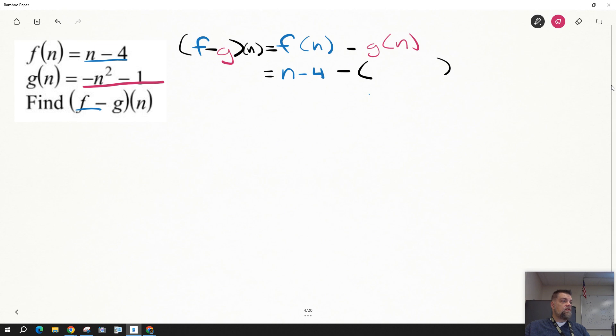Well, g of n is all this stuff. So it's going to be minus negative n squared minus 1. Well, I said minus minus. So it's negative n squared minus 1.